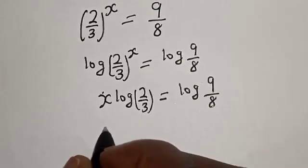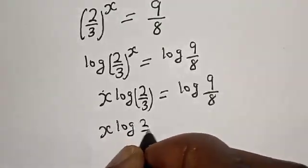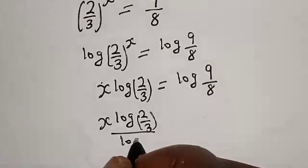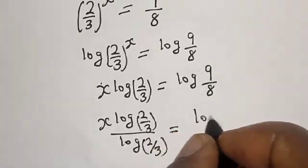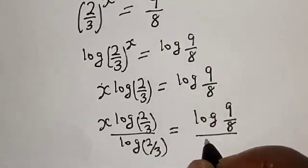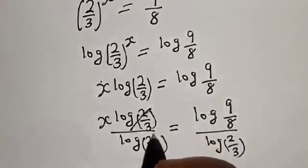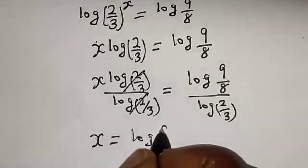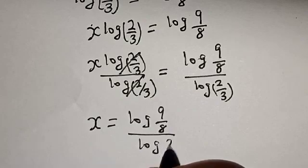Let's divide both sides by log(2 over 3). We have x times log(2 over 3) divided by log(2 over 3) is equal to log(9 over 8) divided by log(2 over 3). This cancels to give x is equal to log(9 over 8) divided by log(2 over 3).